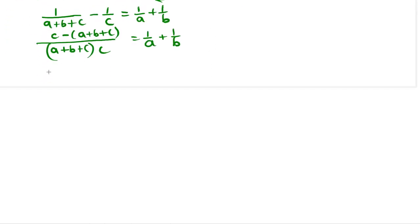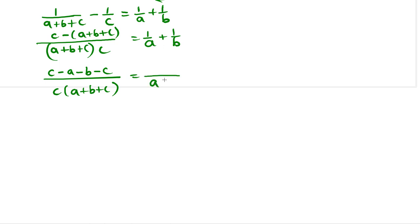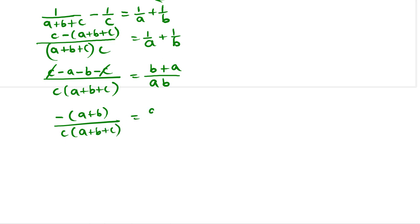Now let us simplify the left side. We get (C minus A minus B minus C) divided by C times (A plus B plus C). On the right side, taking the LCD gives AB in the denominator with (B plus A) in the numerator. On the left side, C minus C cancels, leaving minus(A plus B) divided by C(A plus B plus C), equal to (A plus B) divided by AB.